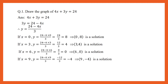If x is equal to 9, y is equal to (24 minus 36) by 3, which is negative 12 by 3, equal to negative 4. Therefore, we can see that (0, 8), (3, 4), (6, 0), and (9, negative 4) are solutions of the linear equation 4x plus 3y equal to 24.